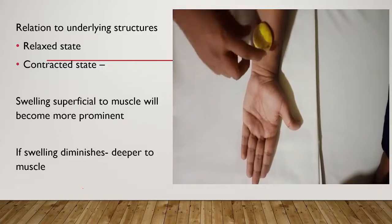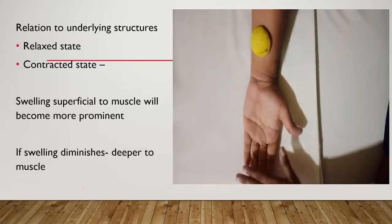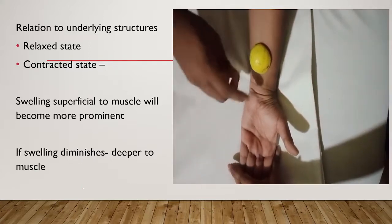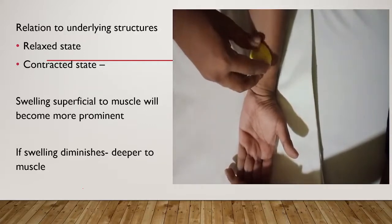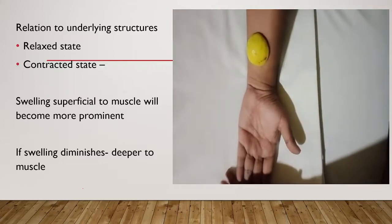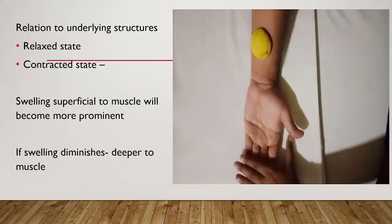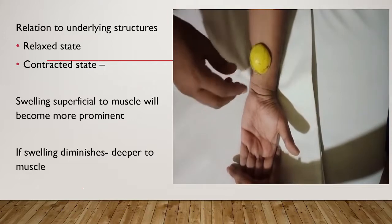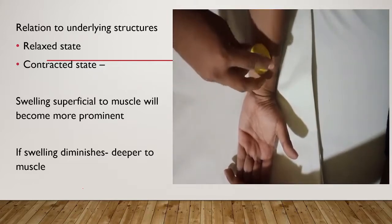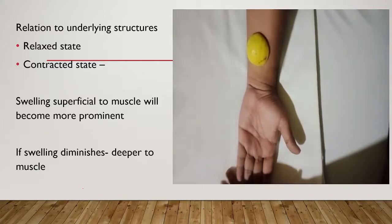Look at the video: in the relaxed state, the swelling is very mobile in both transverse and vertical directions. Then with muscle movement and resistance, look at the contracted muscle — now the swelling is less mobile. The swelling is mobile in both directions in relaxed state, but with muscle contraction and resistance, mobility becomes restricted. That means the swelling is arising from muscle. If the swelling has an origin superficial to the muscle, there will be no difference between contracted and relaxed state mobility.